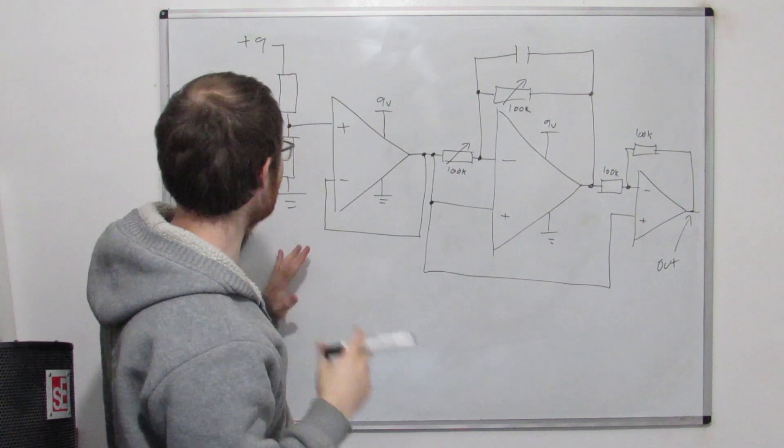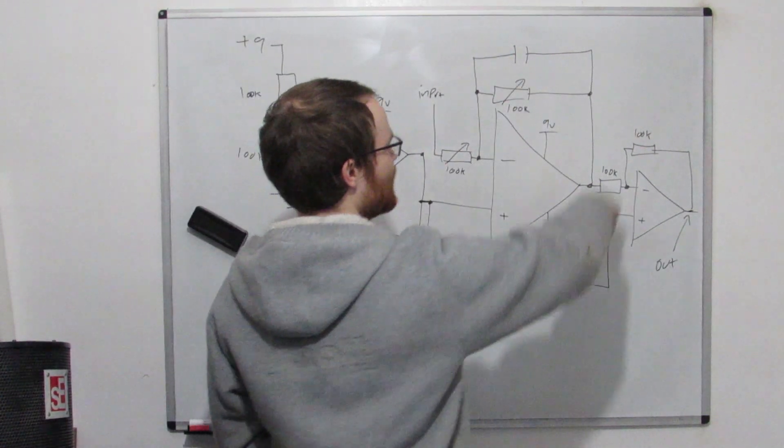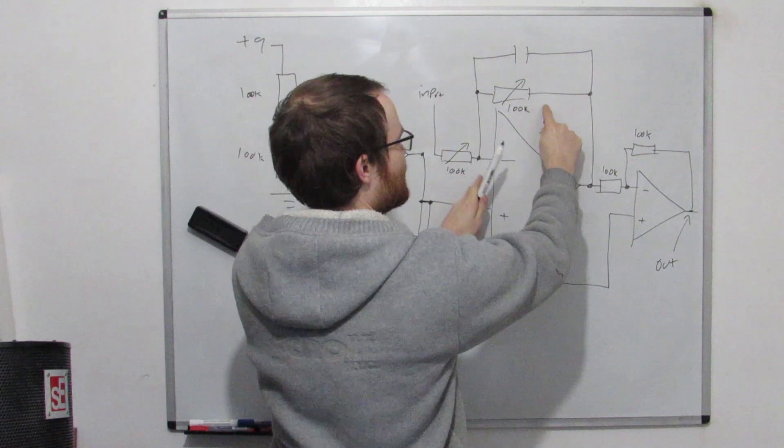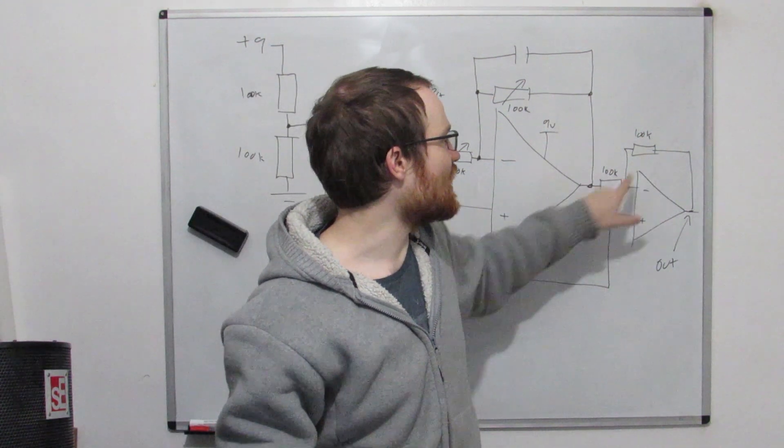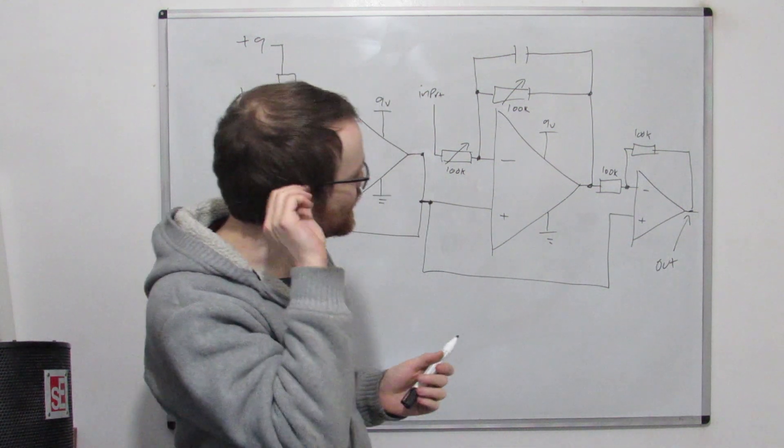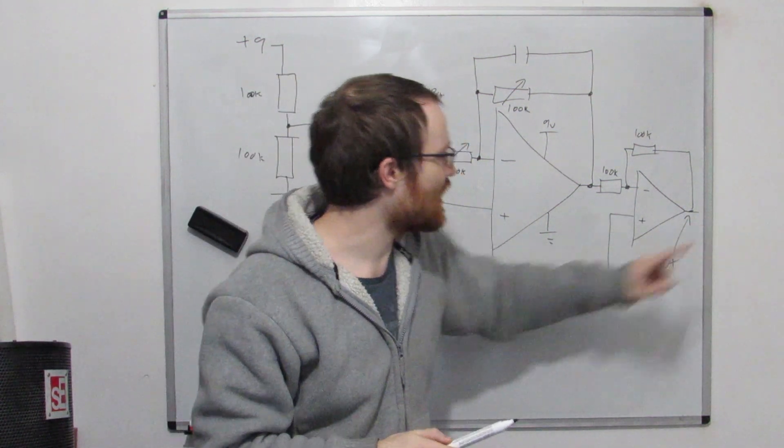Okay so we could set up a circuit like this if we wanted to. This is our low pass filter that we just looked at. Remember this is a stereo potentiometer here, and then this is just a unity gain inverting amplifier, just as a buffer, and then you take the output out here.